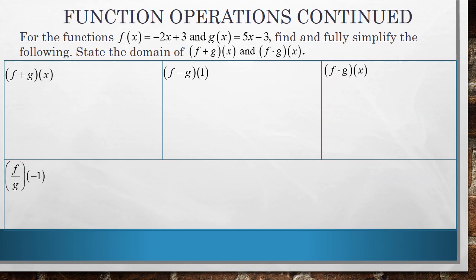For the functions f of x equals negative 2x plus 3 and g of x equals 5x minus 3, find and fully simplify the following. State the domain of f plus g of x and f times g of x. All right, so let's go ahead and do this.